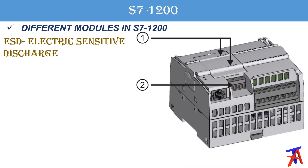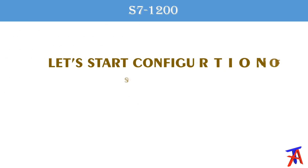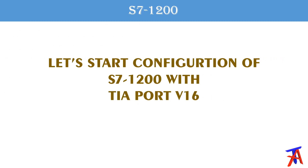The S7 1200 PLC also supports an ESD board that can be added in the middle of the PLC. This board can be a signal board — adding multiple inputs or outputs — a communication board adding another communication port, or a battery board that provides backup for the real-time clock (RTC) of the PLC.